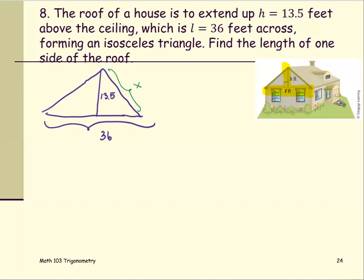That means when we look at the whole picture, there are two right triangles formed. So we just take one of them out and relabel the height is 13.5, and this is the right angle. And the length here now is a half of 36, which is 18. We are looking for X.